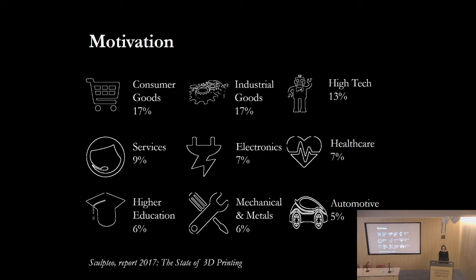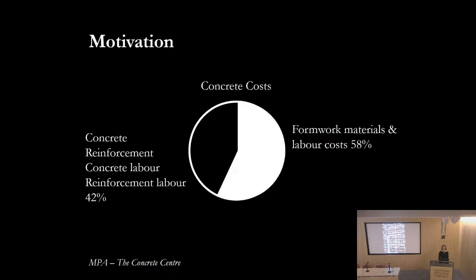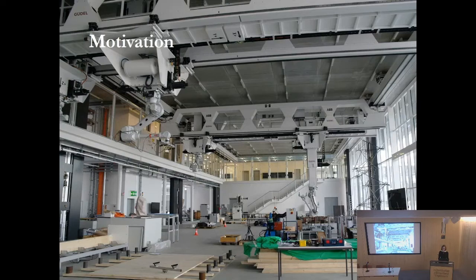No one asks for the same building made more expensively and slower, so we're always trying to find ways to speed up. With traditional concrete elements, we use formwork, which takes time to erect, leads to design standardisation, and accounts for a large proportion of costs. Reports from the Concrete Centre show that over half the cost of a traditional concrete element is actually formwork — the time to put it up, take it down, and the materials.